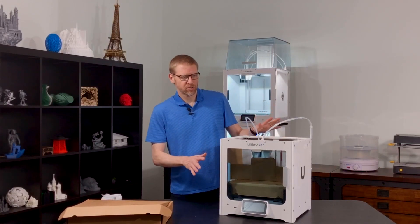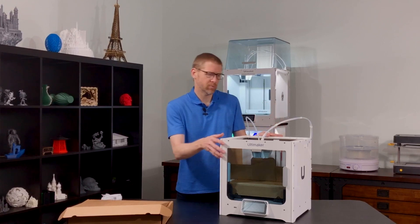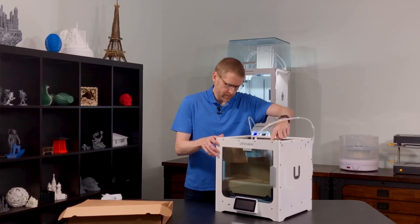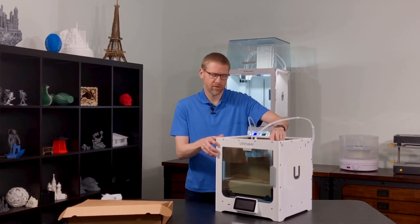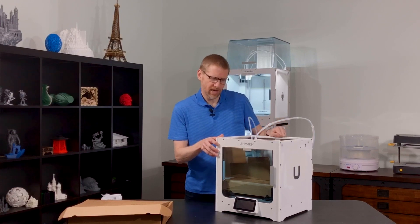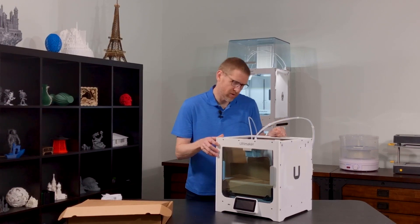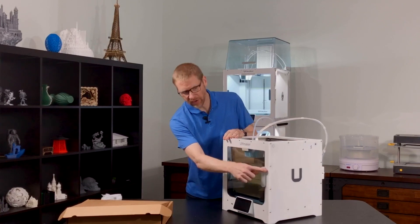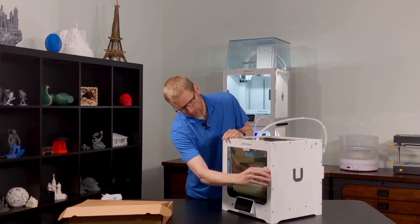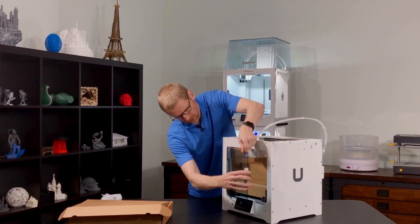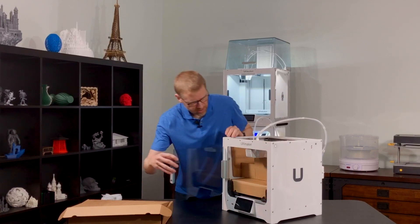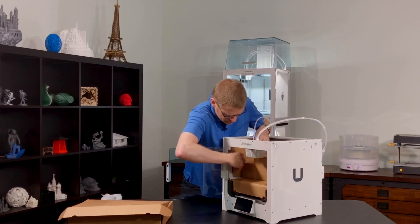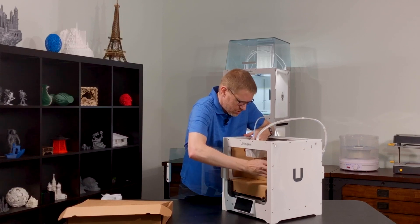As you can see, the Ultimaker S3 comes fully assembled like all of their other printers and it's secured with just a single zip tie around the x-axis rod which we will clip off. But first, it does now have an integrated glass door which we can open. We'll remove the rubber spacer that's on top and inside we'll remove this piece of cardboard to get to our accessories box.